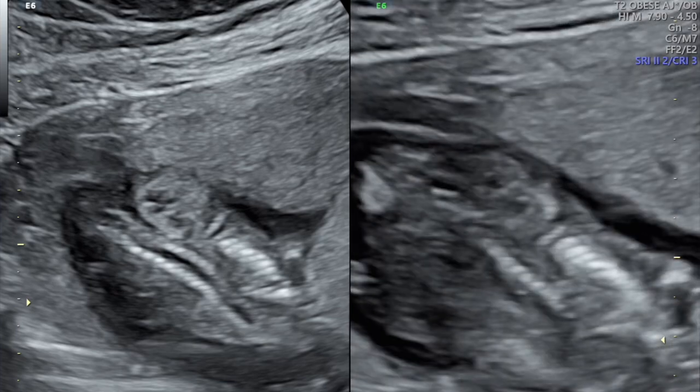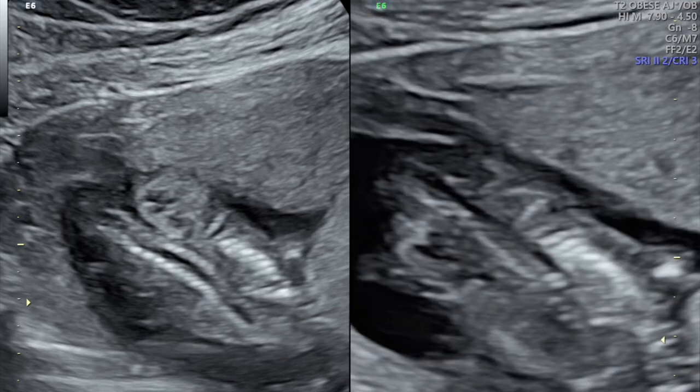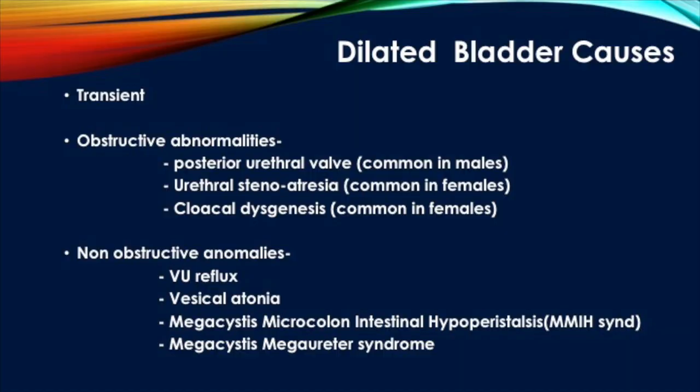The bladder can be identified by the uterine arteries. In this video you can see the dilated pelvicalyceal system and the hyperechoic adrenal cortex. The causes of bladder dilatation include transient dilatation, or obstructive abnormalities caused by posterior urethral valves, urethral stenosis or atresia, or cloacal dysgenesis, or non-obstructive anomalies like VU reflux, vesical atonia, and the MMIH syndrome (megacystis microcolon intestinal hypoperistalsis).